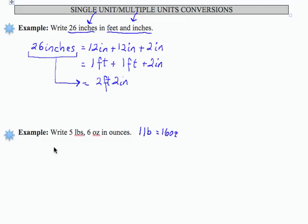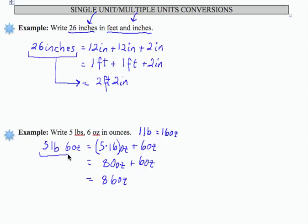So 5 pounds, then, would be 5 times 16 ounces. So let's write it this way. So 5 pounds, 6 ounces would equal 5 times 16 ounces plus 6 ounces. So 5 times 16 is 80 ounces plus 6 ounces, giving us 86 ounces. So the multiple units, 5 pounds, 6 ounces, are equivalent to the single unit, 86 ounces.